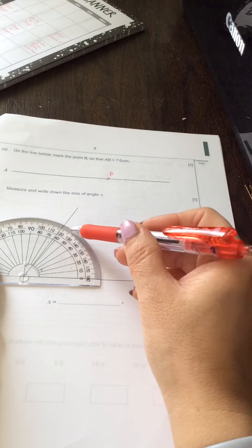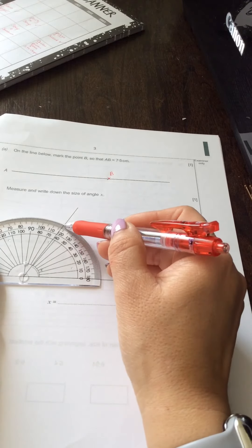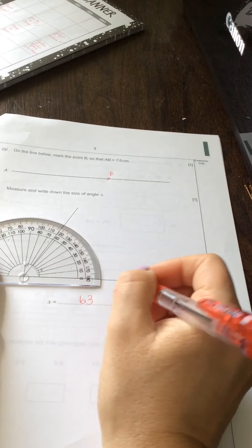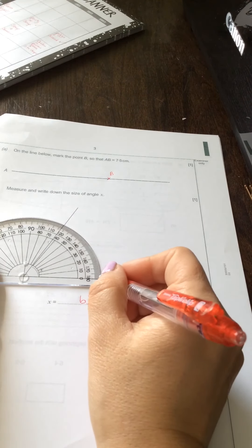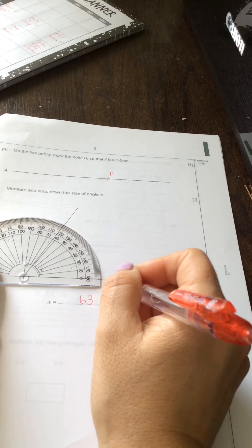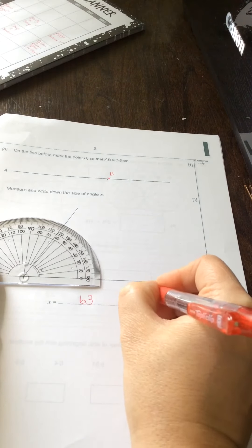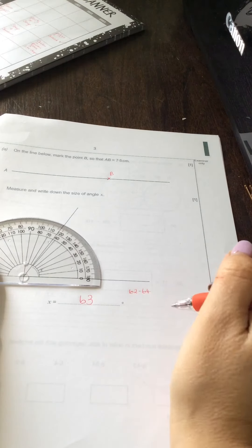We're going to 60, 61, 62, 63—63 degrees. Now the examiner will allow you to have a range of error, so if you were to write anything between 62 to 64, they would allocate you the mark.